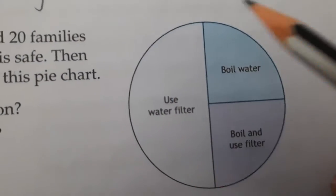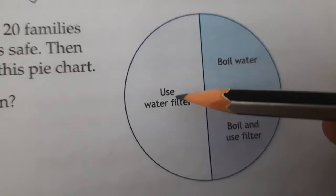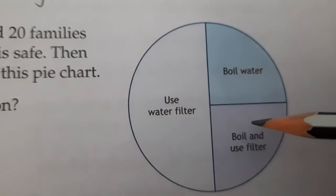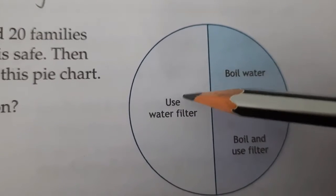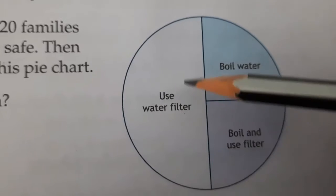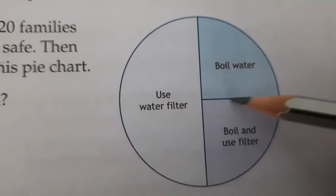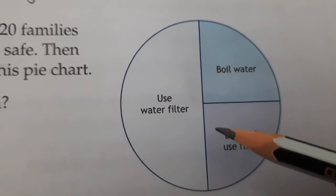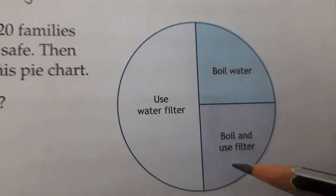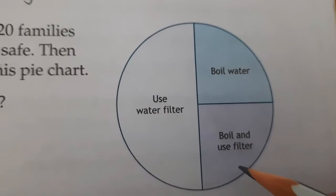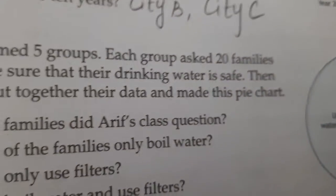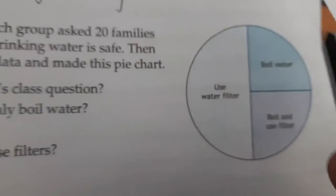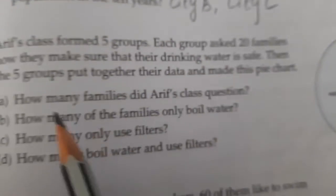This is the pie chart. Half of the families use a water filter for making their drinking water safe. One quarter of the families boil water. And one quarter boil and then also use a filter — they boil first and after that use a filter for making their drinking water safe. Now we have to answer these questions by reading the pie chart.